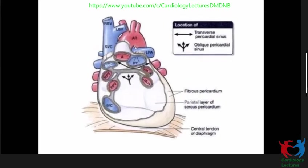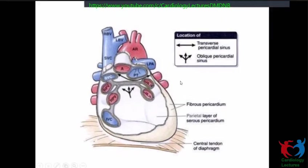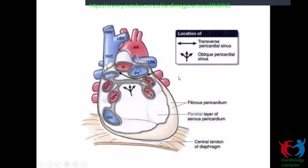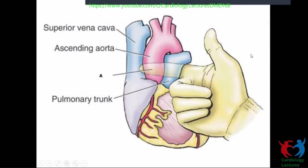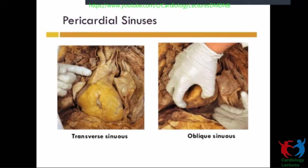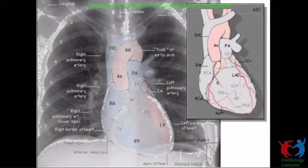This picture shows the transverse sinus — passing a finger across the transverse sinus like how I showed you and putting the heart back in there. That is where the transverse sinus goes, and the picture on the side shows you the oblique sinus. Whenever you look at an X-ray, you think about what you saw on the real specimen.